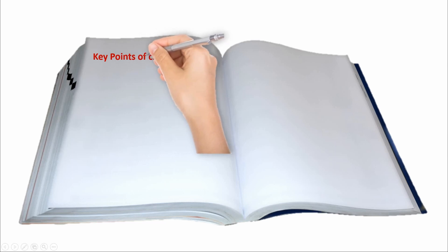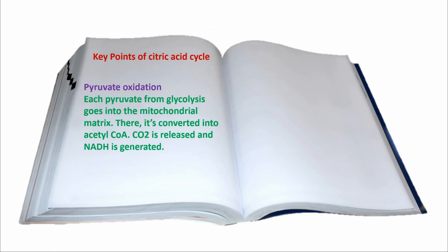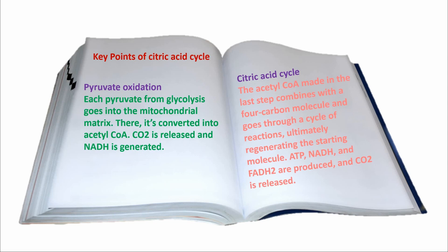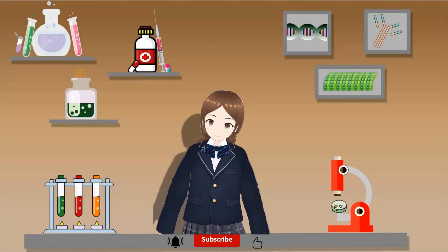Key points of the citric acid cycle. Pyruvate oxidation: each pyruvate from glycolysis goes into the mitochondrial matrix, where it is converted into acetyl-CoA, CO2 is released, and NADH is generated. Citric acid cycle: the acetyl-CoA made combines with a four-carbon molecule and goes through a cycle of reactions, ultimately regenerating the starting molecule. ATP, NADH, and FADH2 are produced, and CO2 is released.